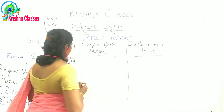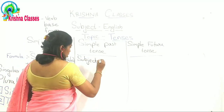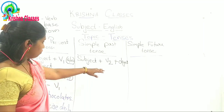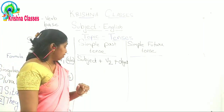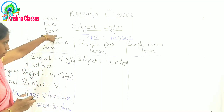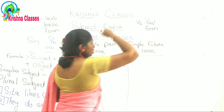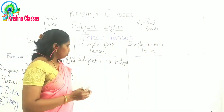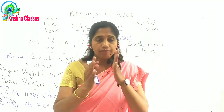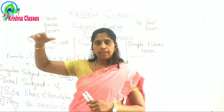Now I will tell you about simple past tense. The formula is: subject plus V2 plus object. V1 is the base form of the verb; V2 is the past form of the verb. Simple past tense is used when you are informing or telling that the action was done in the past — simply that the action is completed.